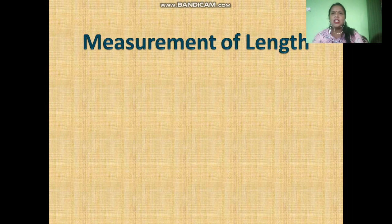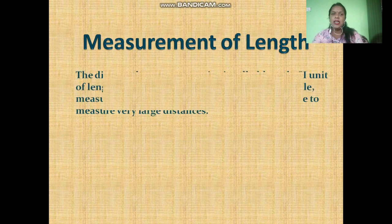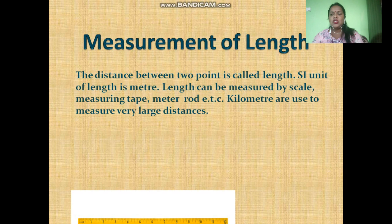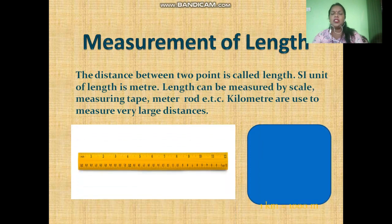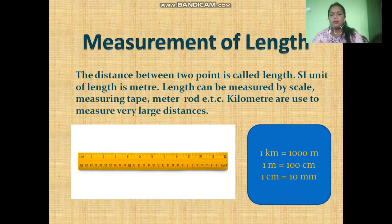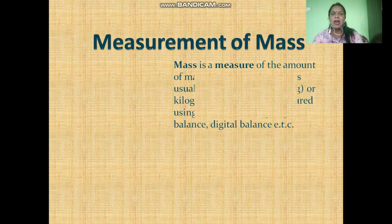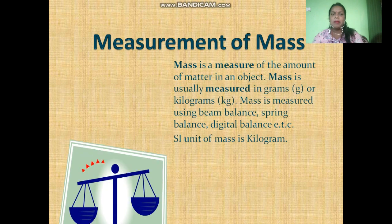Now we will study about three physical quantities: length, mass, and time. Measurement of length — the distance between two points is called length. Length is measured by using a scale, meter rod, or measuring tape. The SI unit of length is meter.